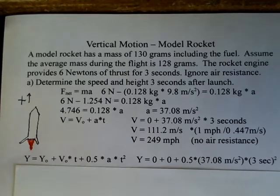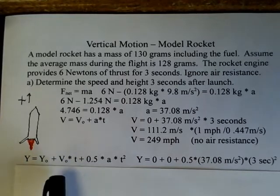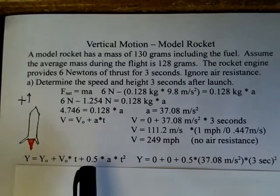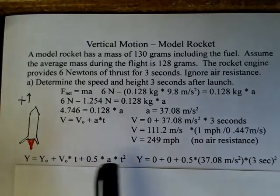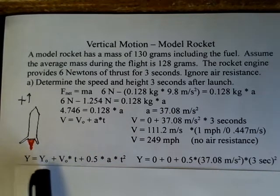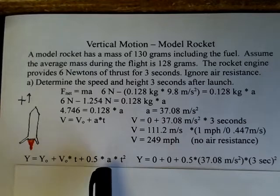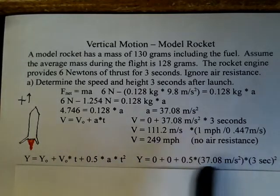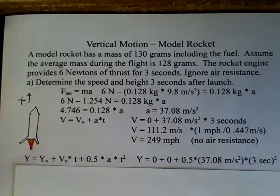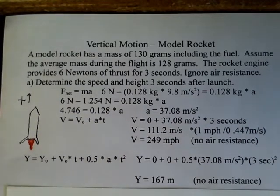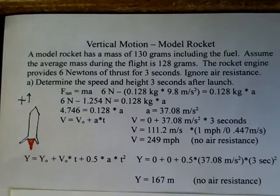To calculate the height, we use the kinematic equation: final position equals initial position plus initial velocity times time plus 0.5 times acceleration times time squared. The initial position and initial velocity are both zero. With acceleration 37.08 m/s² and time of three seconds, don't forget to square the three. The result is 167 meters. Again, this is with no air resistance.